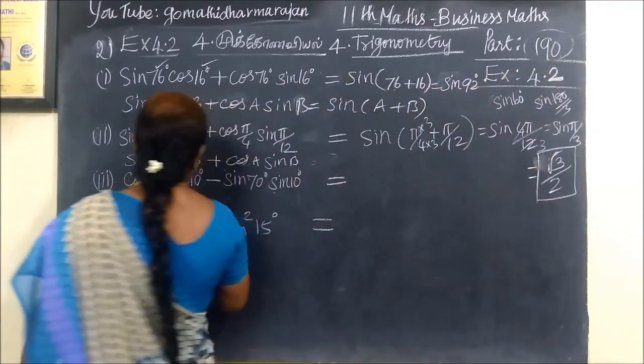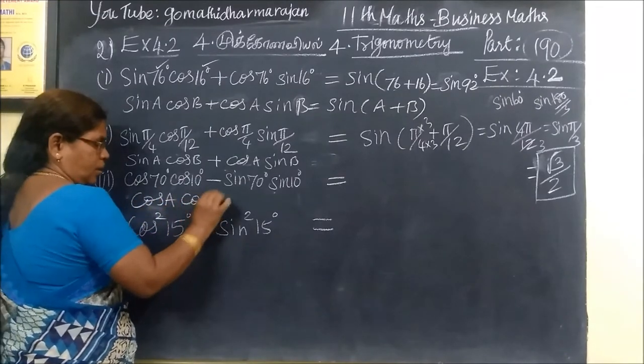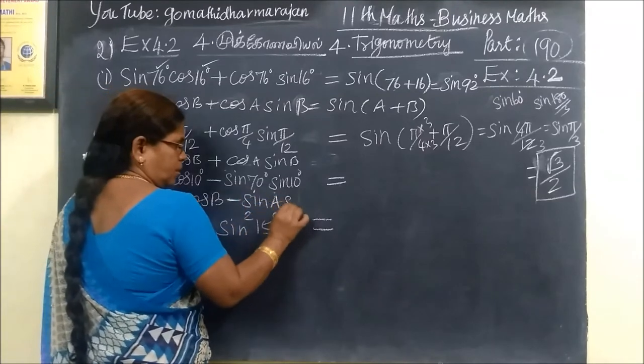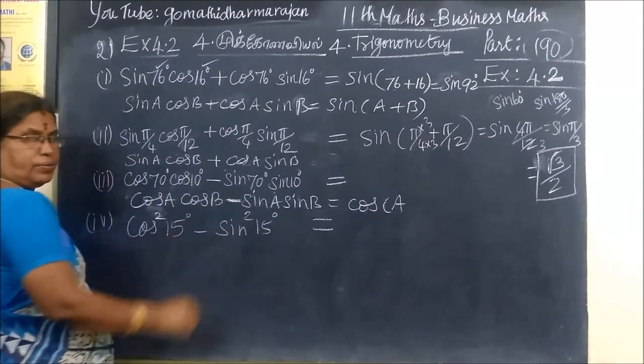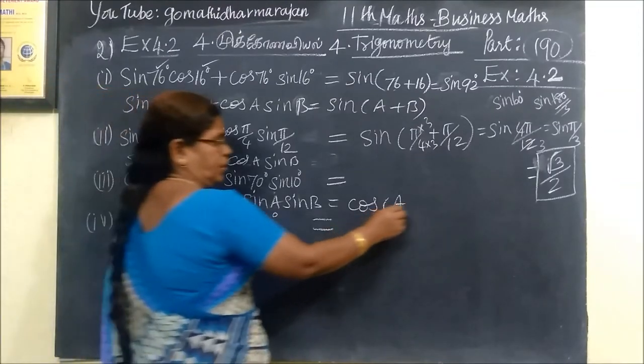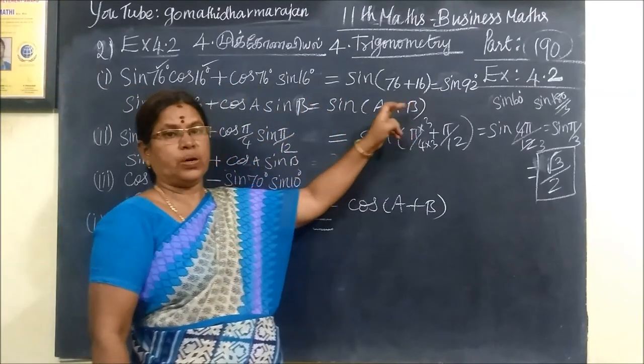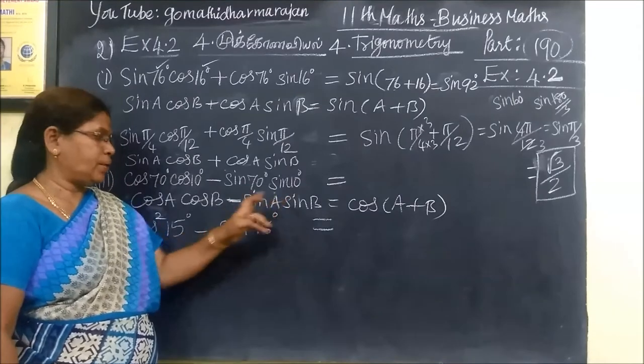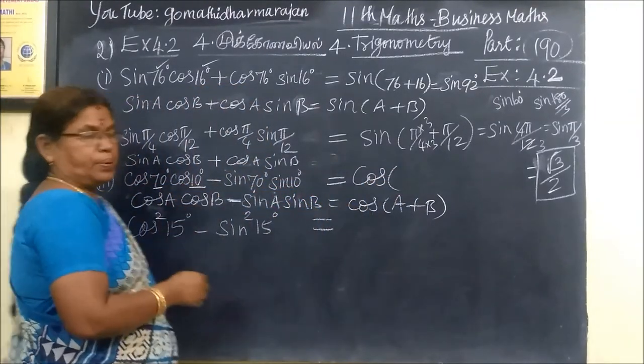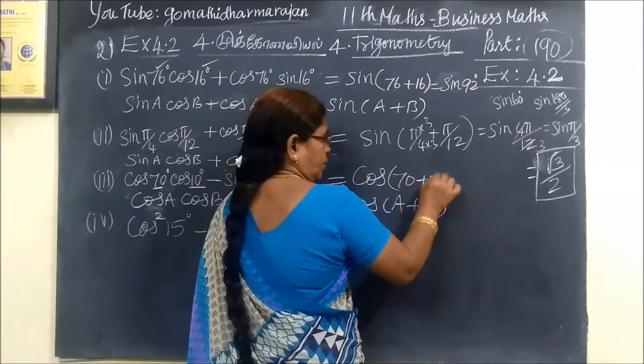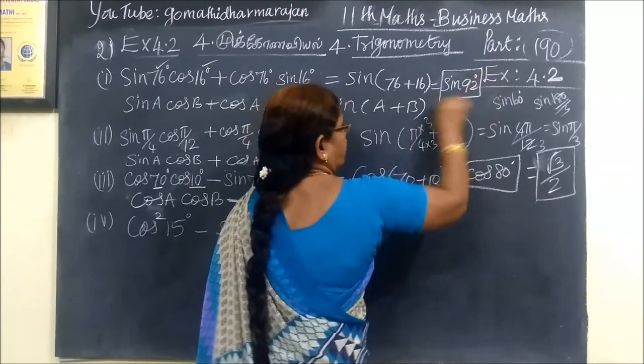After this, third one: cos A cos B minus sin A sin B. This is the formula cos A cos B minus sin A sin B equals cos A plus B. Cos will be plus opposite. Sin plus even. But cos minus means another plus. So here we are writing cos A equals 70, B equals 10. So 70 plus 10 equals cos 80 degrees. This answer is cos 80 degrees.